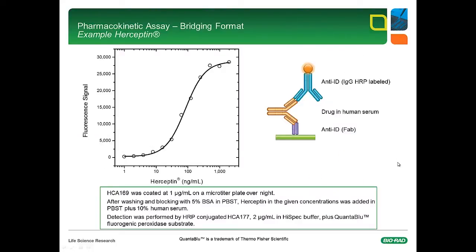With two anti-Herceptin type 1 antibodies, a PK assay was established using the bridging assay format. One of the anti-idiotypic antibodies in FAB format was immobilized on a microtiter plate at a concentration of 1 µg per ml. Herceptin spiked in human serum was added at increasing concentrations. After washing, the bound Herceptin was detected with a second anti-idiotypic antibody, which had been converted to the full-length human IgG1 format and labeled with horseradish peroxidase. The signal is given as fluorescent units recorded from an ELISA reader. About 10 ng per ml of drug in 10% human serum can be reliably detected with this assay. The dynamic range here is almost two orders of magnitude. Both anti-idiotypic antibodies used here have very high affinities for Herceptin in the low picomolar range. Both can be purchased from ABD-Serrotec.